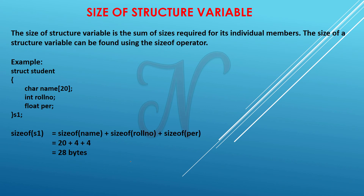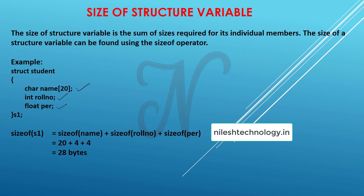If you want to print the size of a structure, use the sizeof operator. Declare one structure with a character array of size 20, an integer variable, and a float variable, and one s1 variable. To calculate the size of the structure: size of name (20 characters × 1 byte = 20 bytes) + size of roll number (integer = 4 bytes) + size of percentage (float = 4 bytes) = total 28 bytes of storage for one structure.